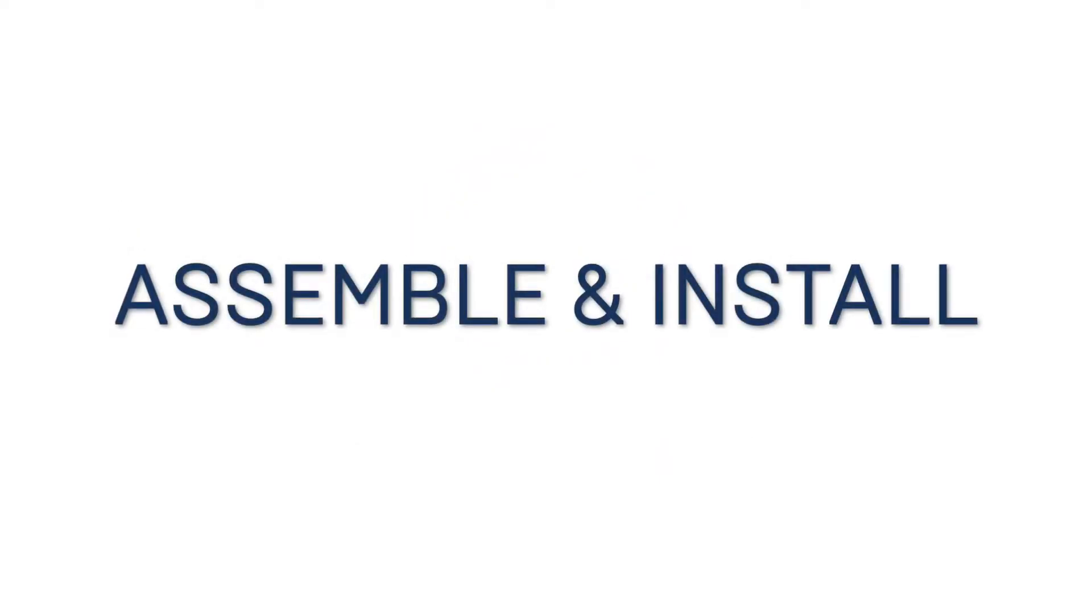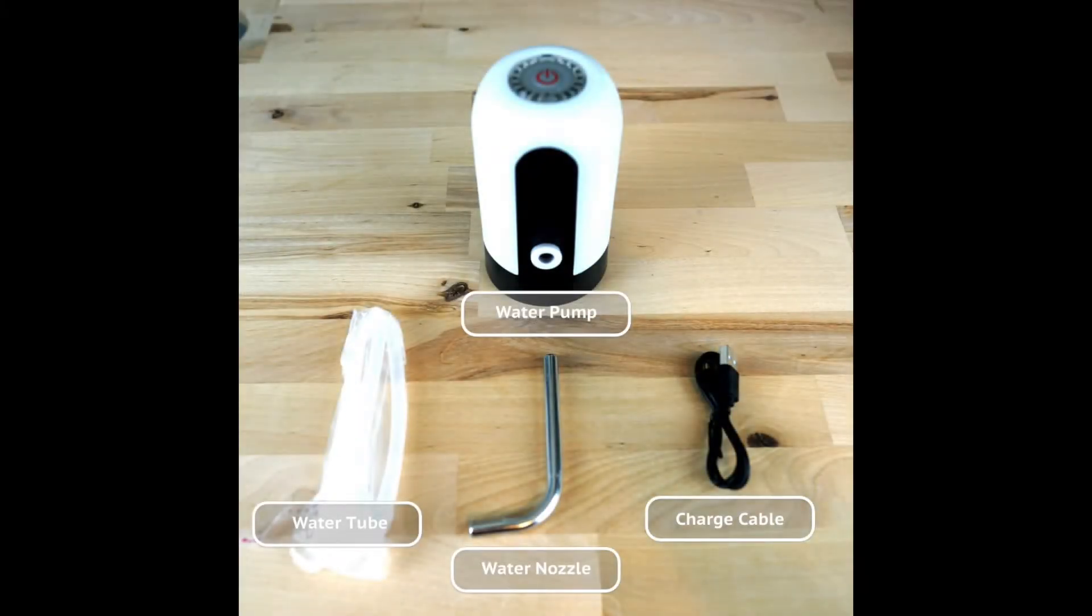First, let's assemble your water pump. There are four components that come in the box: a flexible water tube, a metal water nozzle, a charge cable, and the water pump assembly.